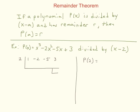Let's start with the remainder theorem. If a polynomial p(x) is divided by x minus a and has a remainder r, then p(a) equals r. For example, I have p(x) = x³ - 2x² - 5x + 3, and I'm going to divide it by x - 2 using synthetic division. Whatever ends up as the remainder will be the same result as plugging 2 in for x. Pause the video and find p(2), then we'll do the synthetic division.